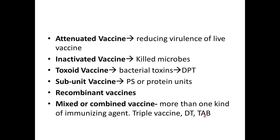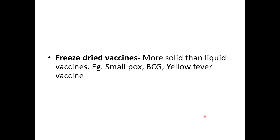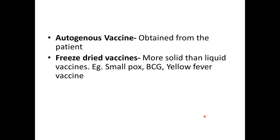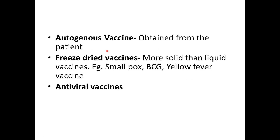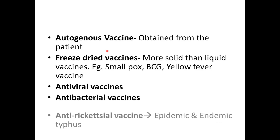Freeze-dried vaccines are more solid than liquid vaccines; examples include the smallpox vaccine, BCG vaccine, and yellow fever vaccine. Autogenous vaccines are obtained from the patient itself. Antiviral vaccines include the yellow fever virus vaccine, rubella, and mumps. Antibacterial vaccines include tetanus and whooping cough. We also have anti-rickettsial vaccines, which include epidemic and endemic typhus.